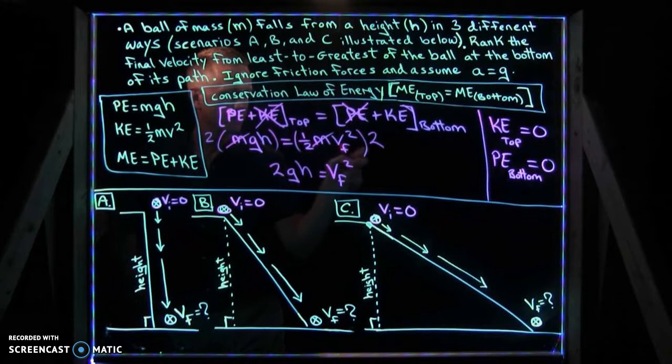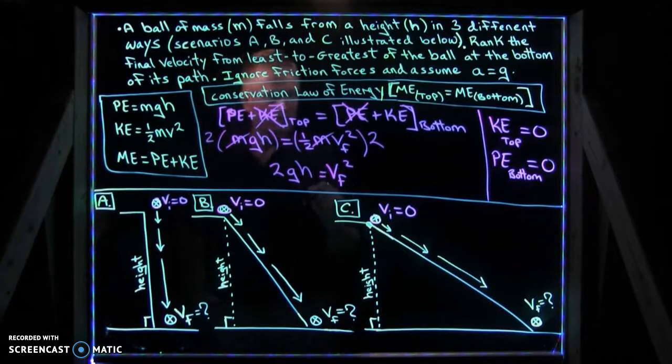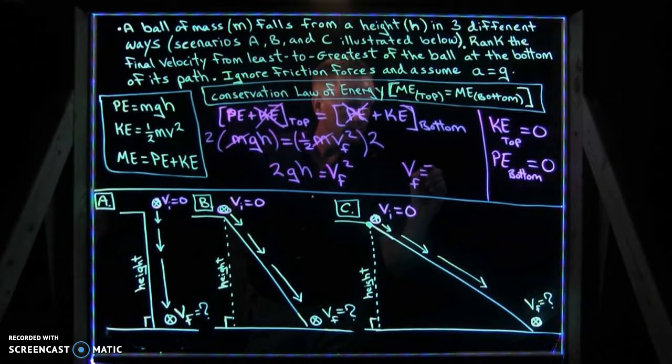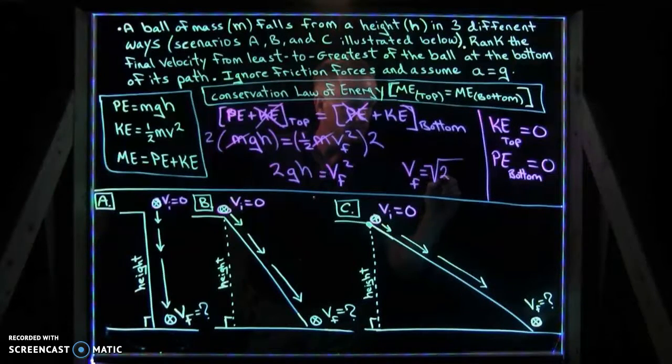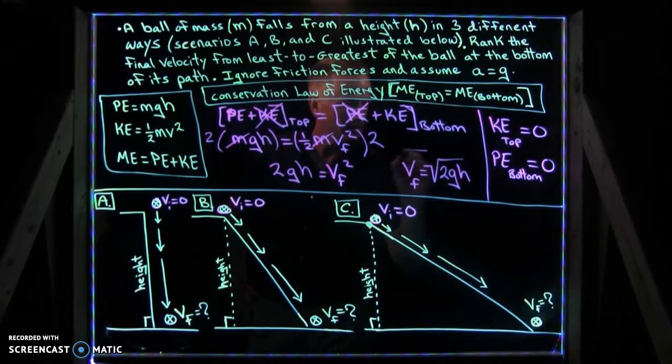2 times a half, that's a half on the right side. And therefore, the final velocity squared is equal to 2gh. Take the square root of both sides, and you find out that the final velocity is simply the square root of 2 times the gravitational constant g times its height.